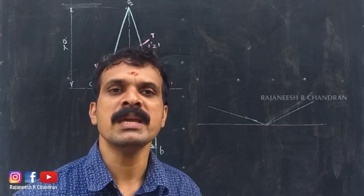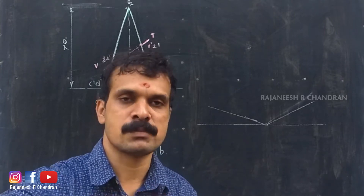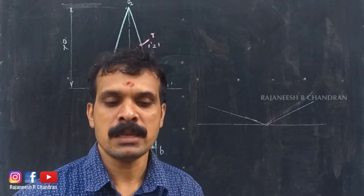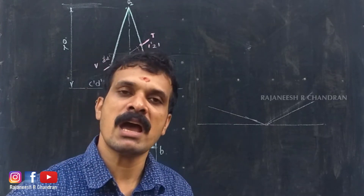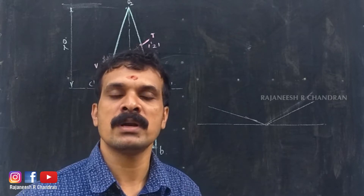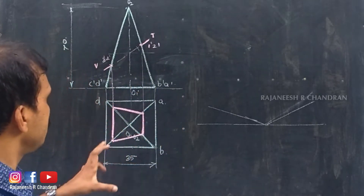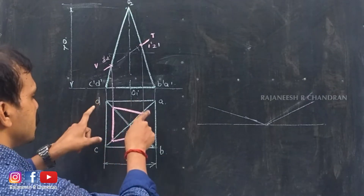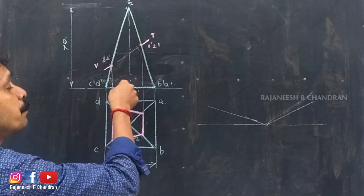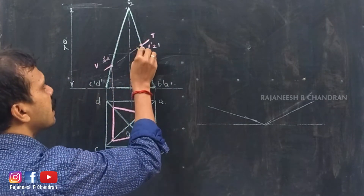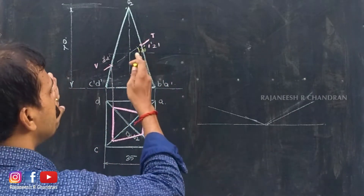The first step will be the construction of the orthographic projection of the given condition. We know that it is a square pyramid placed on the ground and it is cut by a section plane perpendicular to VP, inclined at an angle of 30 degrees with HP, passing through the midpoint of the axis. This will be the vertical trace VT, which intersects the square pyramid at four different points.